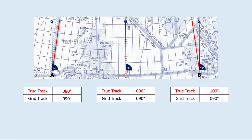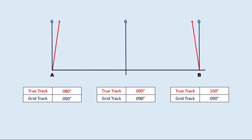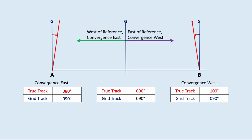Other information we can extract from this diagram: at point A convergence is east, and at point B convergence is west. From this we can conclude that west of the reference gives convergence east, and east of the reference gives convergence west.